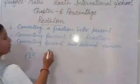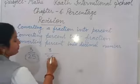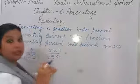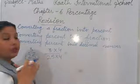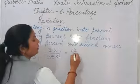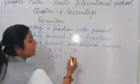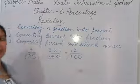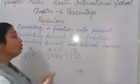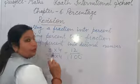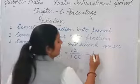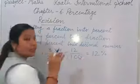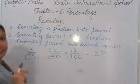So we multiply 3 upon 25 by 4 over 4. 3 fours are 12, and 25 fours are 100. Now we get our denominator as 100. Whenever we have denominator 100, with the numerator we use the percentage symbol. So it becomes 12%. This is the symbol of percentage. Your answer is 12%.